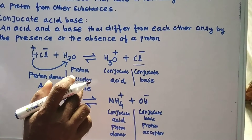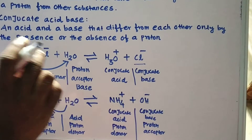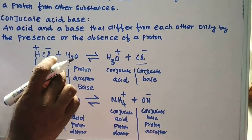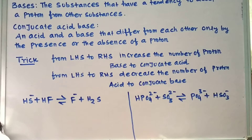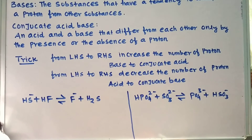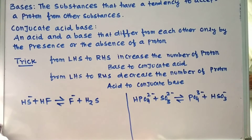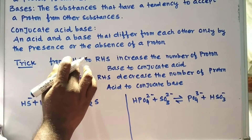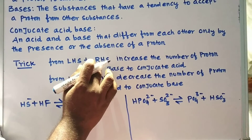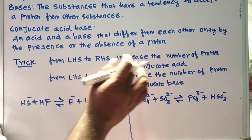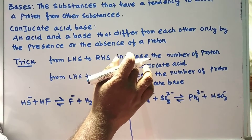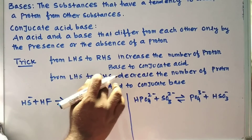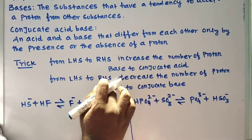Now we are going to see a simple shortcut or trick to find out which is an acid and which is a base, and how to find out the conjugate acid and base. The trick goes from LHS to RHS: from left-hand side to right-hand side, if there is a decrease in the number of protons, it is acid to conjugate base.